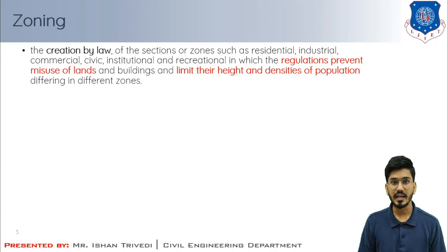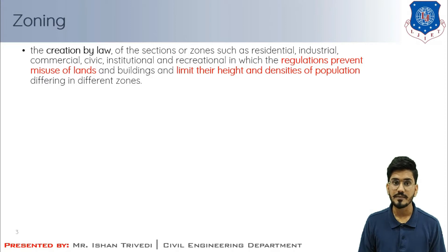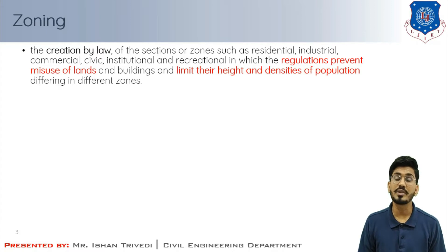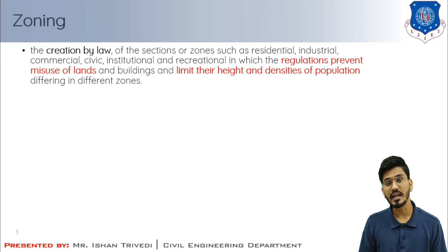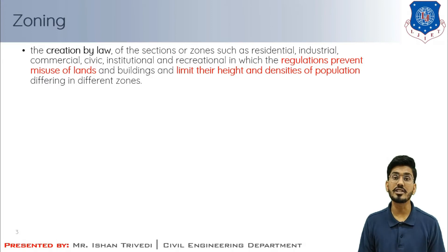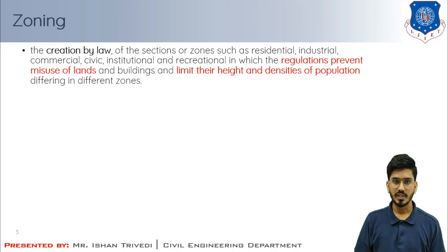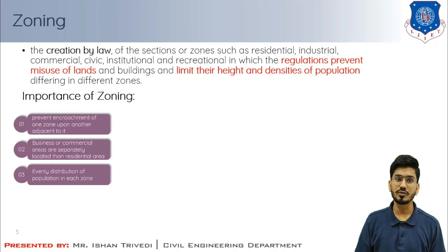Zoning creates boundaries established by laws covering residential, industrial, and commercial areas. Regulations are imposed in such a way that they prevent the misuse of land and buildings, limit building heights, and control the density of population. Now let us understand the importance or advantages of zoning. Zoning sets apart different areas in the town for specific purposes.